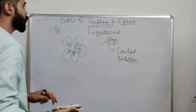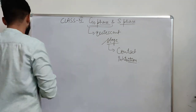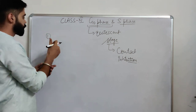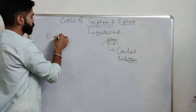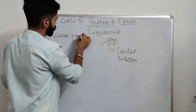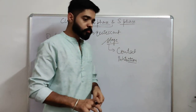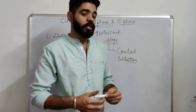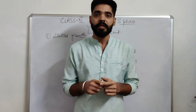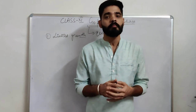Now, talking particularly about the G0 phase — what are the significances of the G0 phase? First: limited growth. This means the cell will stay in its differentiated, non-divisible form and is only metabolically active.